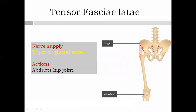The tensor fasciae latae is a short thick muscle present in the gluteal region. It originates from between the anterior superior iliac spine and the iliac tubercle — the highest point of the iliac crest. It is inserted into the iliotibial tract, which we saw earlier encloses this muscle. Its action is the same as the iliotibial tract, plus it assists in abduction of the hip joint. Importantly, the nerve supply is the superior gluteal nerve — the only muscle in this group with a different nerve supply. This completes the anterior compartment of the thigh muscles.